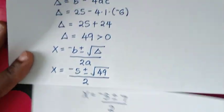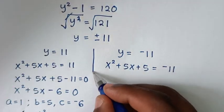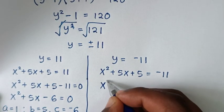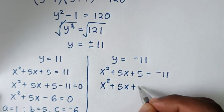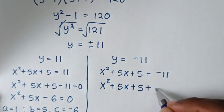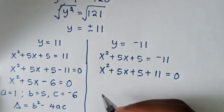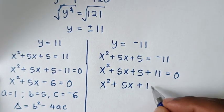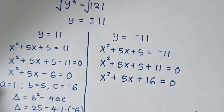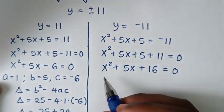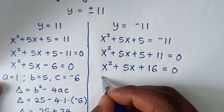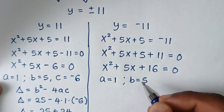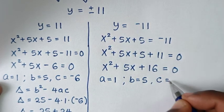Now let's solve from the second solution, y equals negative 11. Taking negative 11 to this side: x squared plus 5x plus 5 plus 11 equals 0, so x squared plus 5x plus 16 equals 0. Coefficients: a equals 1, b equals 5, c equals 16.